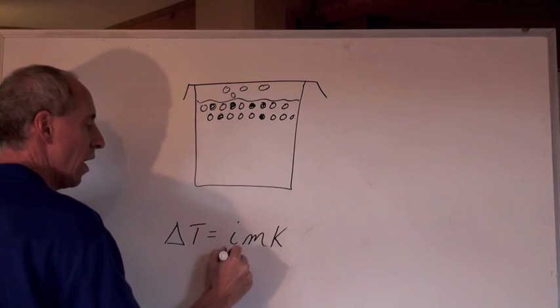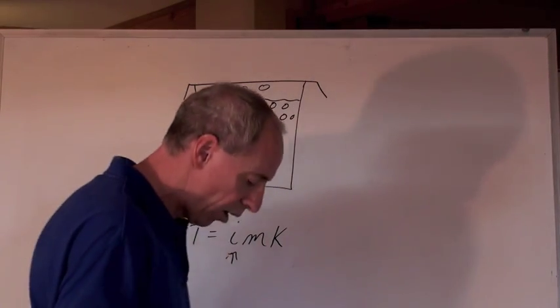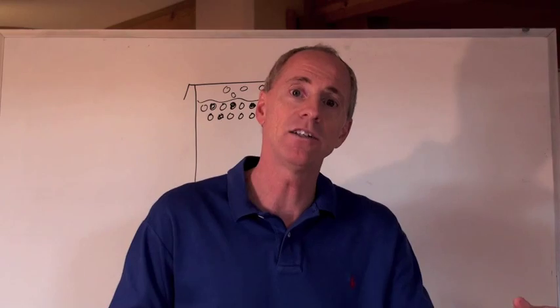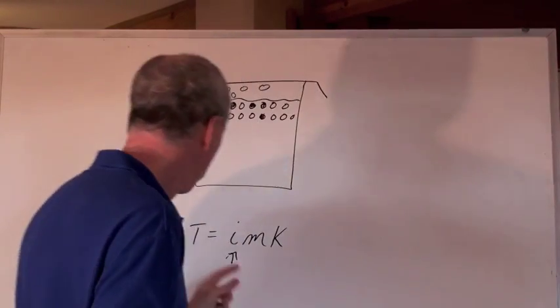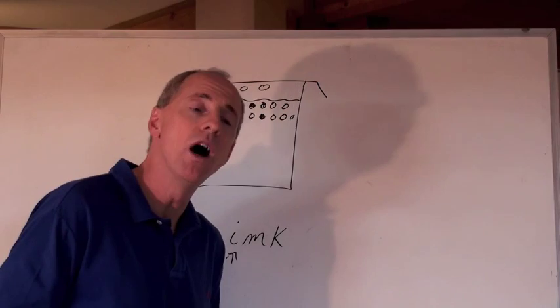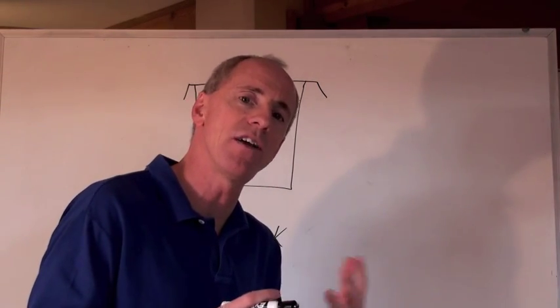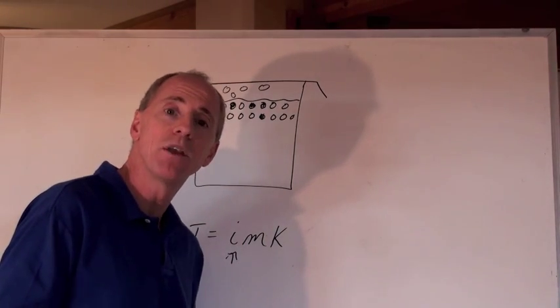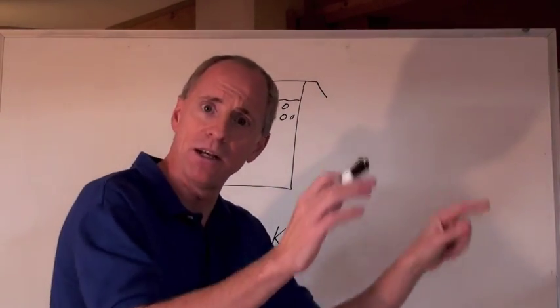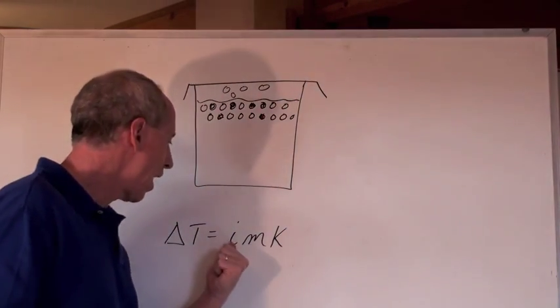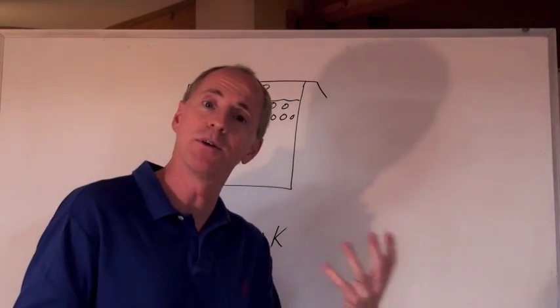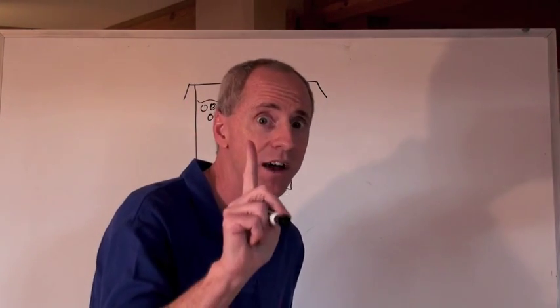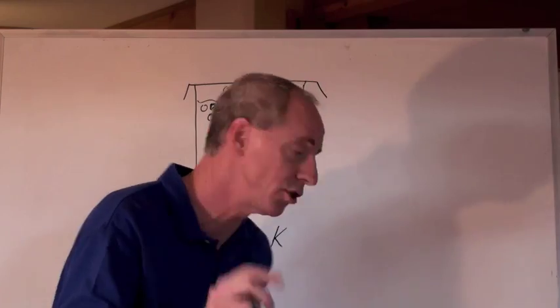This is the formula. Delta T equals i·m·K, where i is the number of particles that the salt dissociates into if it's ionic. So, for sodium chloride, it would be roughly around 2, although there is a little bit of a correction, a Van't Hoff correction that has to occur. It's really about 1.9 for NaCl, but that's okay. That would be a table, and you can look it up. So, the i value is generally just the number of dissociated particles that the solute forms. And if it's molecular, the i value is always 1 because they don't dissociate in solution.